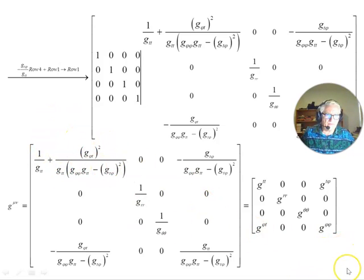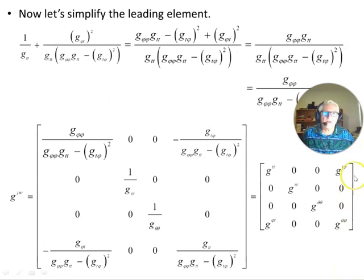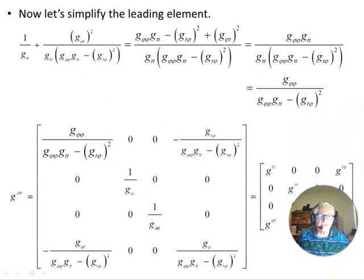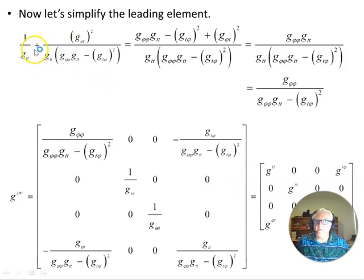Starting with the leading term, we end up with this: our common denominator is this on top, and here's the numerator. In the numerator, these terms cancel and we're left with this. The g_tt will cancel with that, and we're left with this nice simpler term. Let's put that back into our inverse metric.